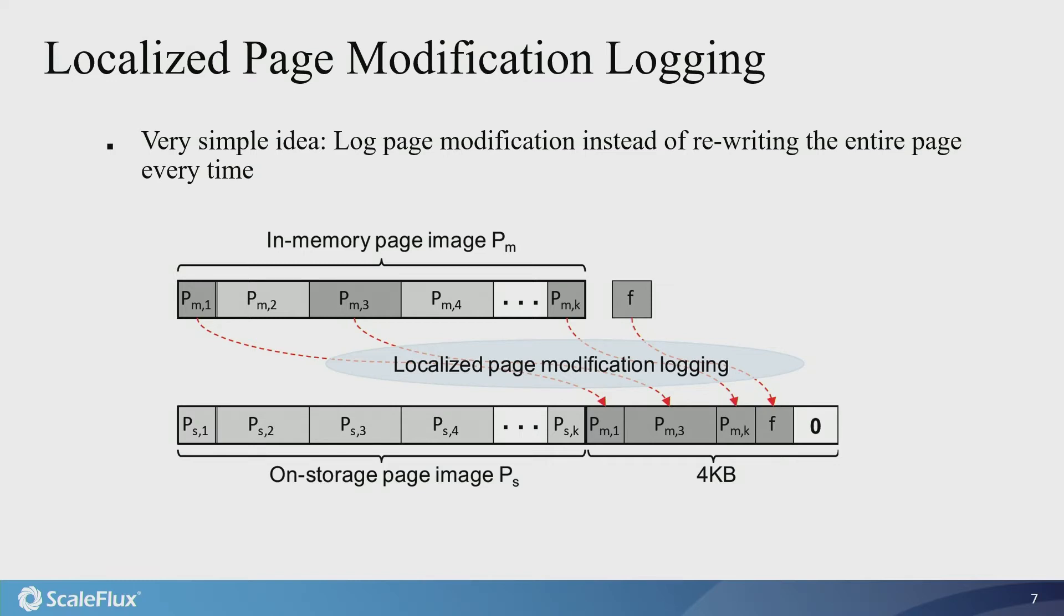We also define a threshold T. So once delta is larger than T, we will reset the process by flushing the entire up-to-date page to storage with delta equals zero and f being all zero vectors.